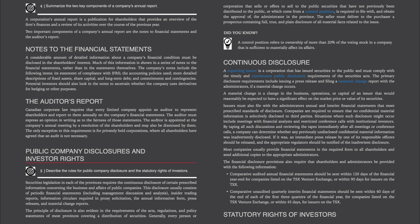Most companies usually provide financial statements in the required form to all shareholders and send additional copies to the appropriate administrators. The financial disclosure provisions also require that shareholders and administrators be provided with: comparative audited annual financial statements sent within 120 days of the financial year-end for companies listed on the TSX Venture Exchange, or within 90 days for issuers on the TSX; and comparative unaudited quarterly interim financial statements sent within 60 days of the end of each of the first three quarters of the financial year for companies listed on the TSX Venture Exchange, or within 45 days for issuers on the TSX.